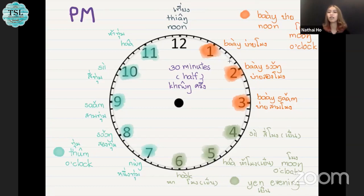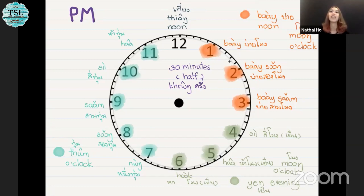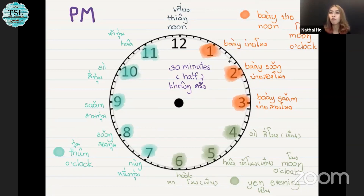Some students ask about 30 minutes. How to say 30 minutes in Thai? You can say สามสิบนาที — that is the proper way. But if you want to say it like a local, we change it to half. สามสิบนาที means half, and in Thai we say ครึ่ง, ครึ่ง.